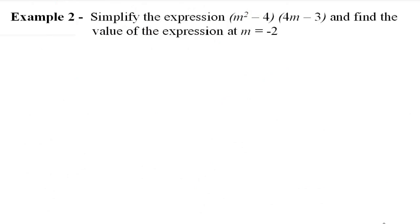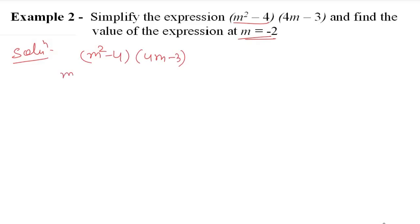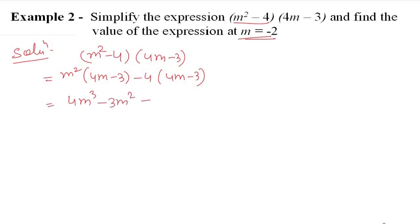Example number 2: simplify the expression and find its value at m = -2. The expression is (m² - 4)(4m - 3). Distributing: m² × 4m = 4m³, m² × (-3) = -3m², (-4) × 4m = -16m, (-4) × (-3) = +12. There are no like terms, so the simplified form is 4m³ - 3m² - 16m + 12.